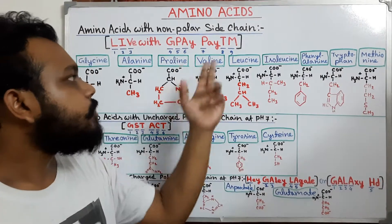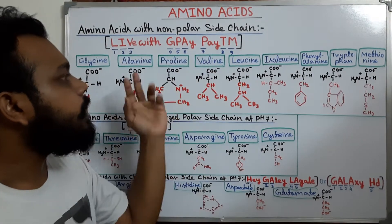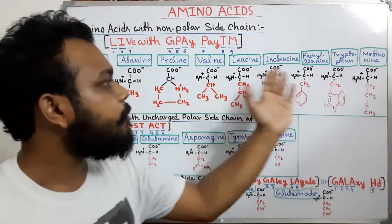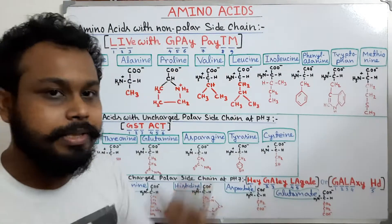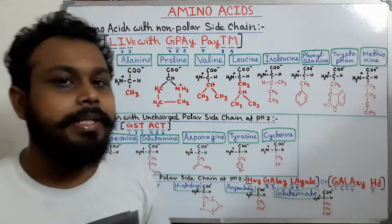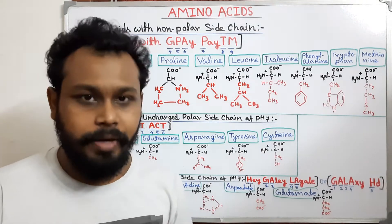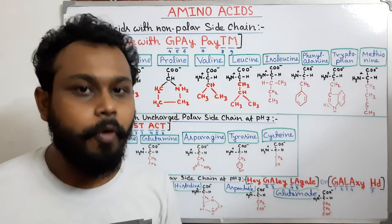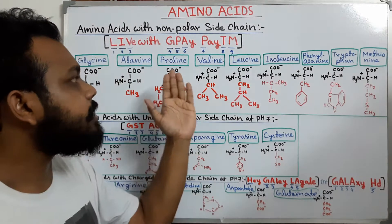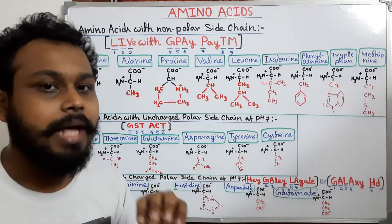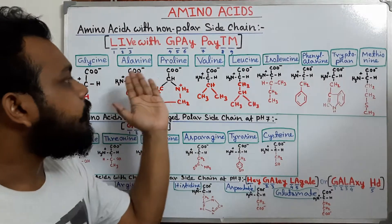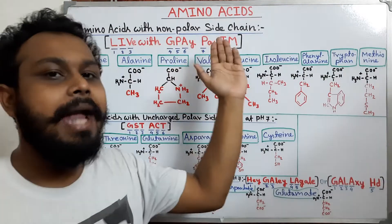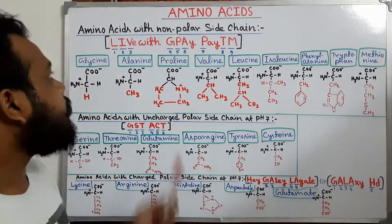We will remember all these amino acids with a trick — a sentence to memorize them all. The first nine amino acids have non-polar side chains. Non-polar means they don't like the water environment, i.e., aqueous environment — that means these side chains are hydrophobic. We can memorize the amino acids with hydrophobic side chains by this sentence: 'Live with GPA and PTIM.'